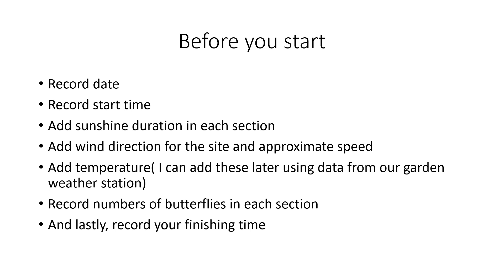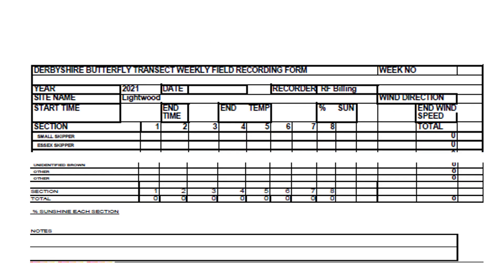So we'll start with filling in the recording form. Before you start, I always take a notebook with me, but some people will actually take a recording sheet — I find the recording book easier. We start off with a date and the time we started the survey. As we go round the survey route, which is divided into sections, we'll record the sunshine in each section. I usually do this by checking on my shadow: if there's a shadow, we've got sunshine; if there's no shadow, we haven't. At the end we'll add the wind direction and the approximate temperature, and when we finish we put in the finishing time.